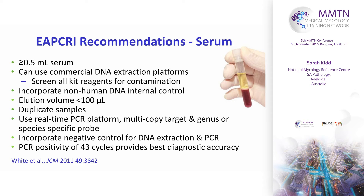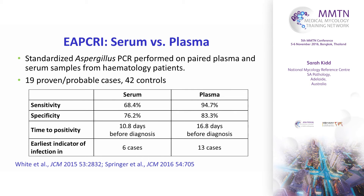For serum, as little as 0.5 mL can be used as starting volume, though ideally more. Commercial DNA extraction platforms can be used, but all kit reagents must be screened beforehand for fungal contamination, which can cause false positives — kits can arrive completely contaminated. Non-human DNA controls, elution volume under 100 µL, and duplicate samples are again required. Serum is a more attractive specimen to work with — easier to handle, smaller volumes, smaller tubes and centrifuges, and faster. For serum, a PCR positivity at 43 cycles provides the best diagnostic accuracy.